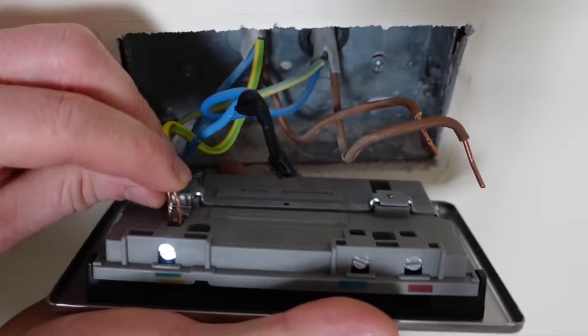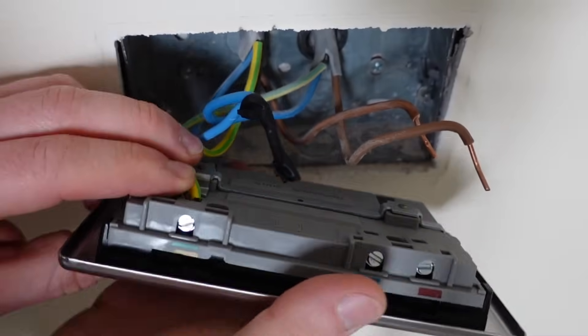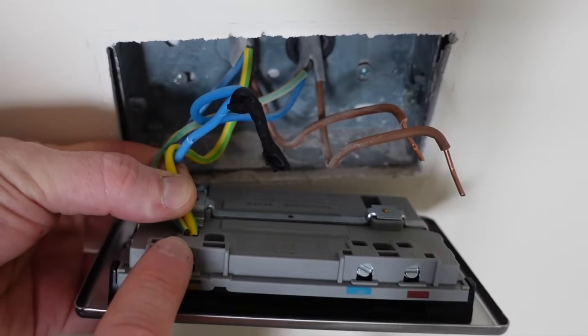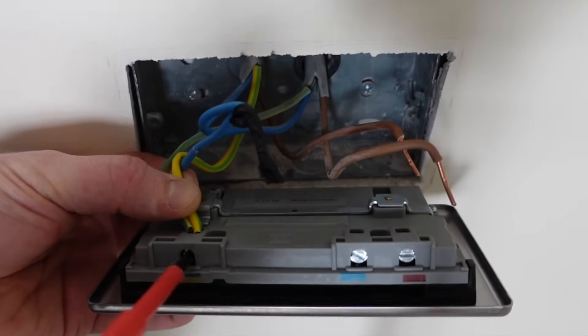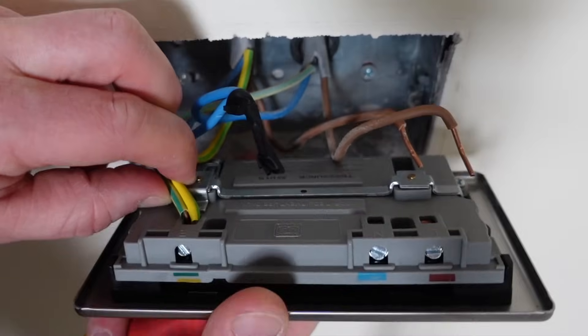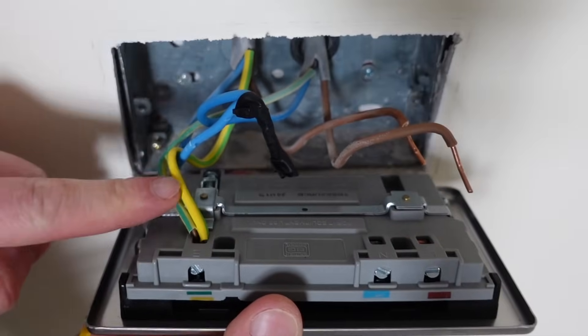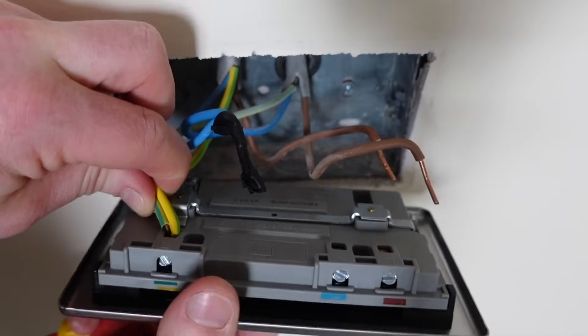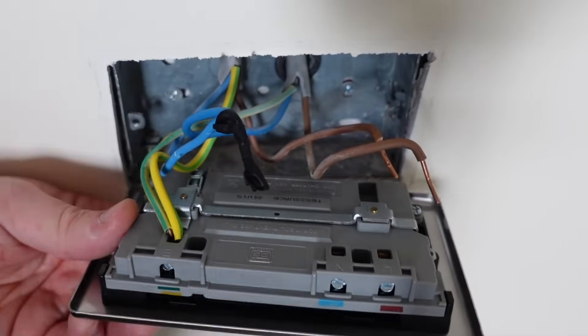So we'll pop the earth wires into the earth terminal, both of them, and just make sure that you have no exposed copper. And then we'll do up that earth terminal nice and tight with our screwdriver and just give them a little tug because sometimes especially when we've got two wires in each terminal you don't get good contact and a wire could pop out. So make sure you give them a little tug.